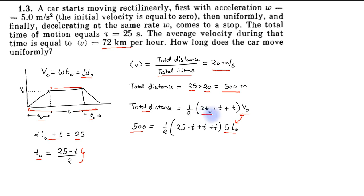So the value of t₀ is given by 25 minus t. Now if we simplify this equation, we will have 500 equals half times (25 plus t) into 5t₀, where t₀ is given by (25 minus t) divided by 2.